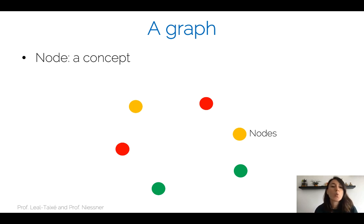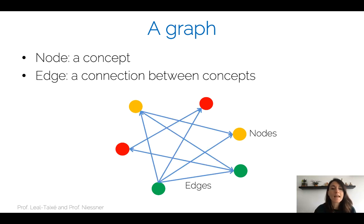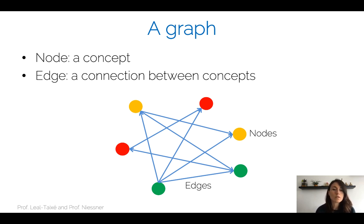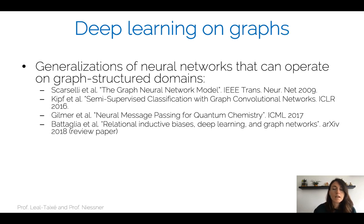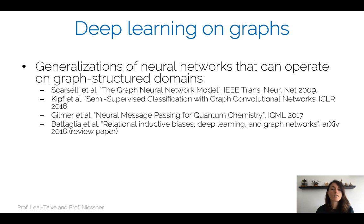Let's start by defining what a graph is. A graph contains nodes and edges. Nodes represent concepts — for example, friends in your social network — and edges represent connections between those concepts, such as whether you are friends with another person. There has been a lot of work on deep learning on graphs, which essentially generalizes neural networks to operate on domains with a graph structure.